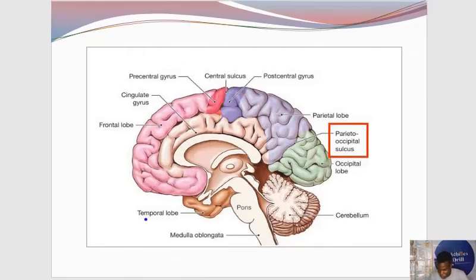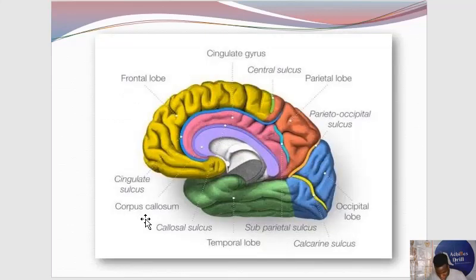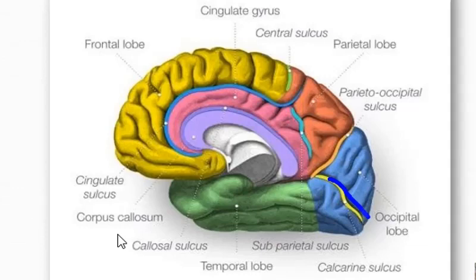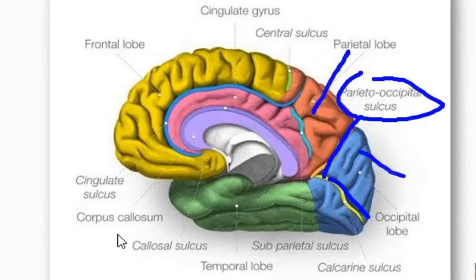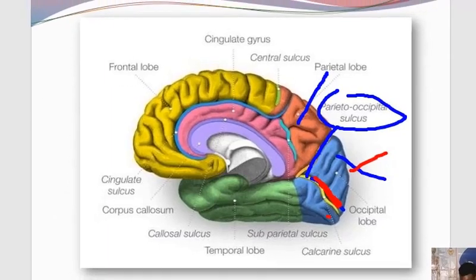We also have the parieto-occipital sulcus, which separates the parietal lobe from the occipital lobe. And there is another important sulcus in the posterior part of the brain called the calcarine sulcus. Here is a better picture of it. The parieto-occipital sulcus separates the parietal lobe from the entire occipital lobe. The calcarine sulcus, shown in red, actually divides the occipital lobe into a superior part and an inferior part.